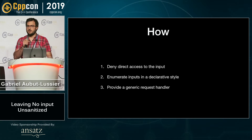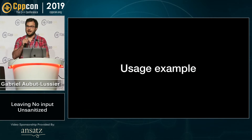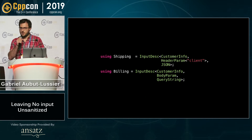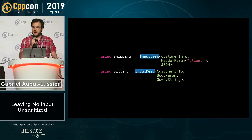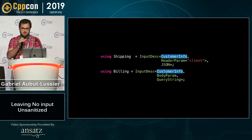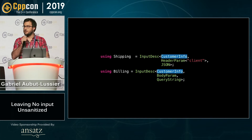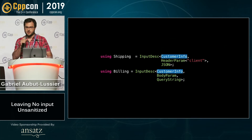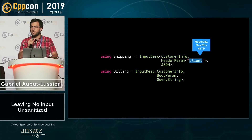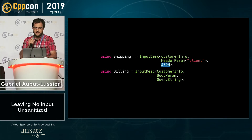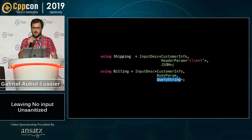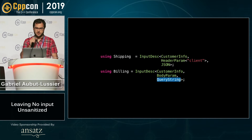Here's how it can look like from the client side. We have two different types that are used to describe two different inputs. Those two inputs happen to be of a user-defined type called customer information. The first input is going to be extracted from the header of the HTTP request called 'client', and we expect this input to be formatted as JSON. Our second input is extracted from the body of the HTTP request, and we expect this one to be structured as a query string.